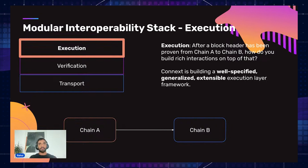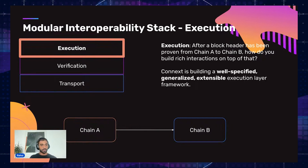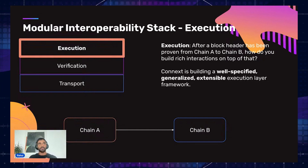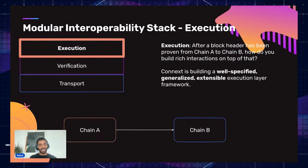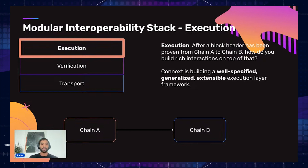The bottom two layers don't have much value in terms of fees — they're going to be highly commoditized, a race to the bottom. But the application and execution layer is where you have more room, and really, execution is what brings us cross-chain composability. Without it, you can only consume data across chains; with it, you can actually create applications and build rich interactions. To bring it back to the web analogy: the web is a graph of hyperlinks between content, independent of the links under the hood — that's where we need to get with blockchain. Connext is trying to focus on and build a really well-specified, generalized, extensible execution layer framework.